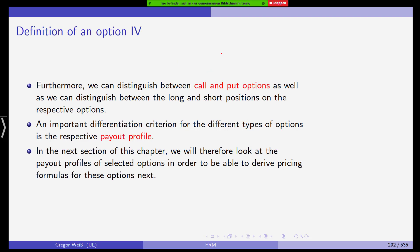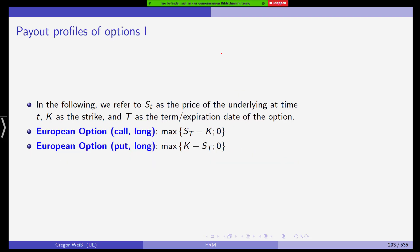We can distinguish between call and put options. Those are the plain vanilla ones. And long and short positions. And an important criterion to differentiate between different types of options is the corresponding payout profile of the option. And in the next chapter, we'll have a look at those payout profiles of some selected options. And we'll see how these options can be priced.